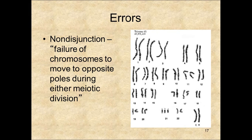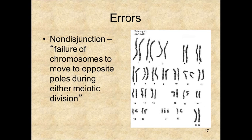This is a picture of a karyotype. It represents each one of the chromosomes and you can see how they've been paired up. If you look at chromosome number 21, this individual has three chromosome 21s instead of two. This is called trisomy 21. In humans, we know it as Down syndrome.